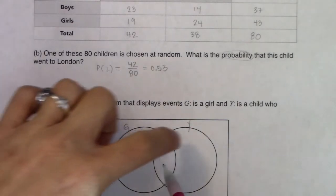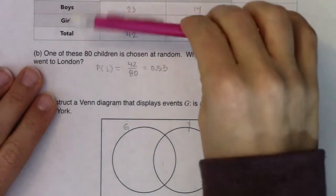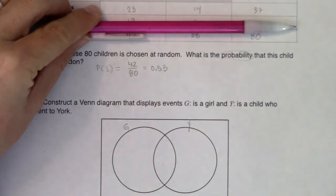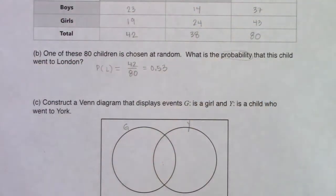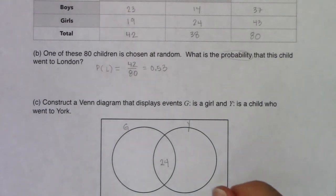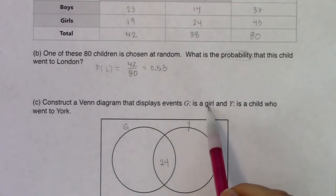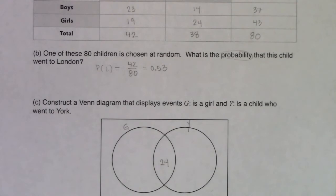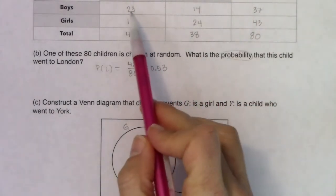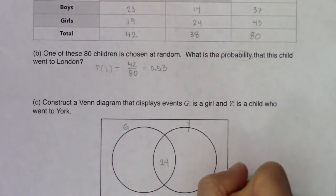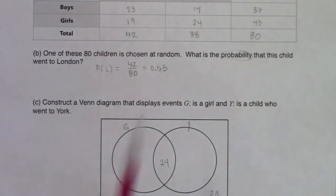The football in the Venn diagram is the overlap, and in the table it's where your column and row overlap. I need the girl row and the York column — where they overlap, the number is 24 — so I place 24 in the football. The next thing I like to do is find the 'neithers.' The folks outside both circles are not girls and did not go to York, which is another way of saying they are boys who went to London.